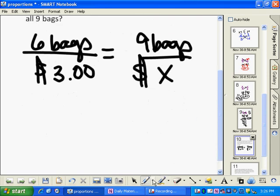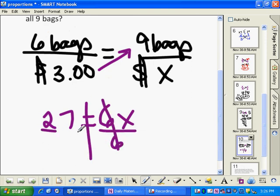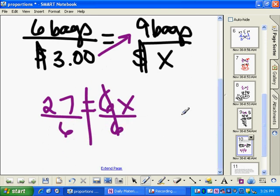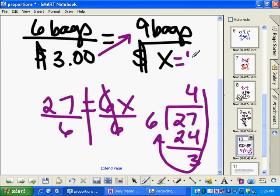So now to solve this problem, I'm going to cross multiply. 9 times 3 is 27. We're not going to worry about our units right now. 6 times x is 6x. Again, I'm going to divide both sides by 6 so that I isolate the variable. 27 divided by 6. 6 goes into 27 four times. 4 times 6 is 24. Subtract and get 3. Well, I can see that this is 4 and 3 sixths, which is 4 and a half, which is $4.50. So I would pay $4.50 for 9 bags of Cheetos.